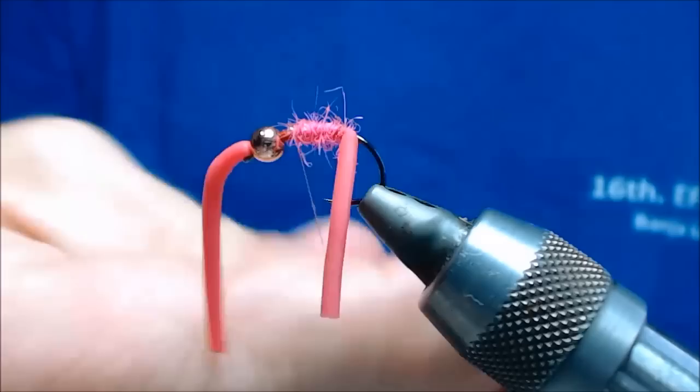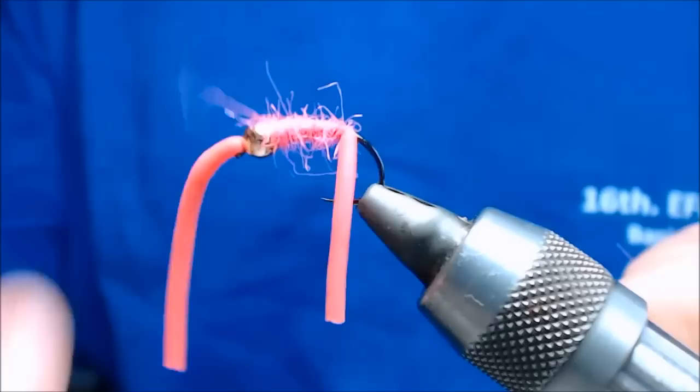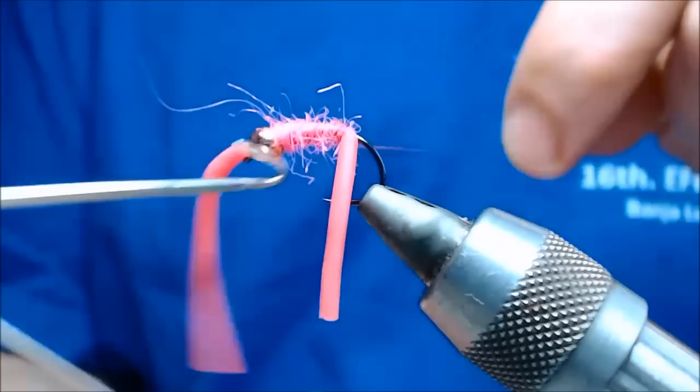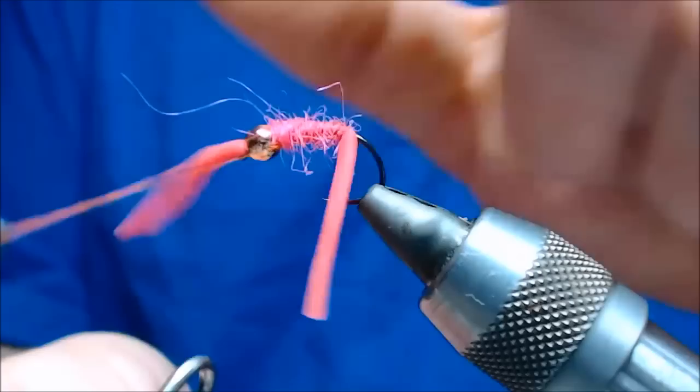Right, and a bit more dubbing. There we go. As I said, no varnish because varnish will react with the material and it will break it and it will make it brittle. So no varnish, no super glue.